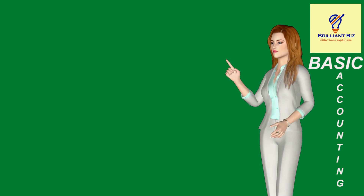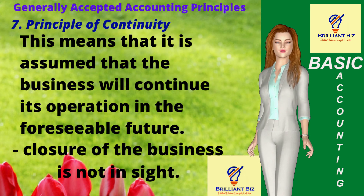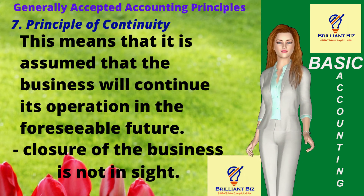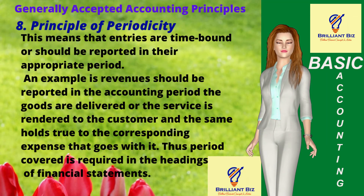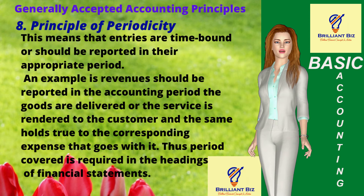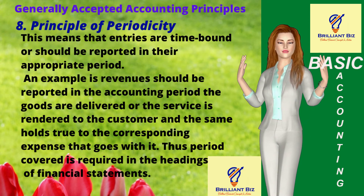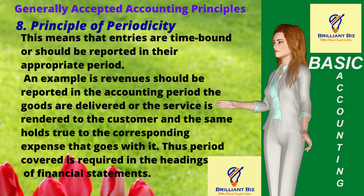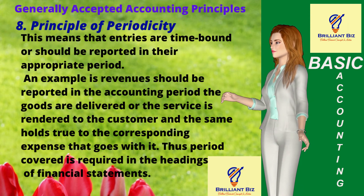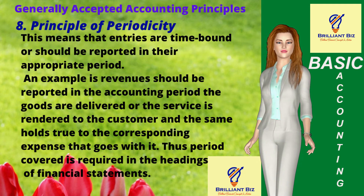Number 7: Principle of Continuity. This means that it is assumed that the business will continue its operation in the foreseeable future, or closure of the business is not in sight. Number 8: Principle of Periodicity. This means that entries are time-bound or should be reported in their appropriate period. An example is revenues should be reported in the accounting period the goods are delivered or the service is rendered to the customer, and the same holds true to the corresponding expense that goes with it.